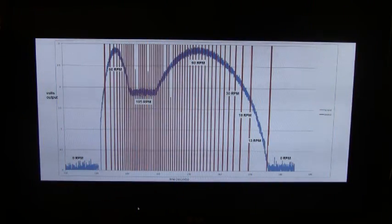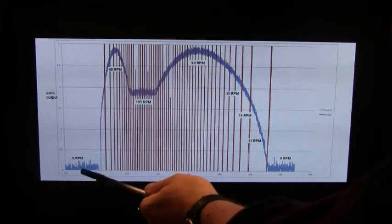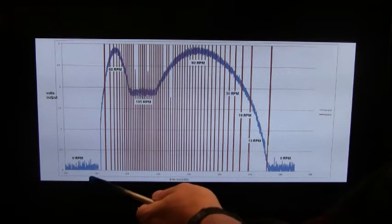What we're looking at here is the data logger output that we've imported directly into Excel, and it shows what happens when you start from zero and speed the rotor up to 105 RPM and then allow it to go back down to zero. So this is our baseline voltage at zero RPM, which we've set to around zero on the multimeter.